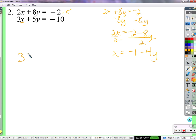So 3 times (negative 1 minus 4y) plus 5y equals negative 10. What are we going to do now? Distribute. Let's see, negative 3 minus 12y plus 5y equals negative 10.